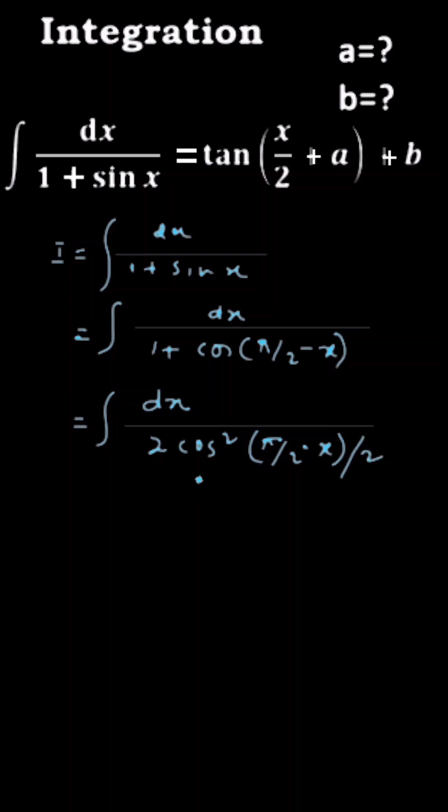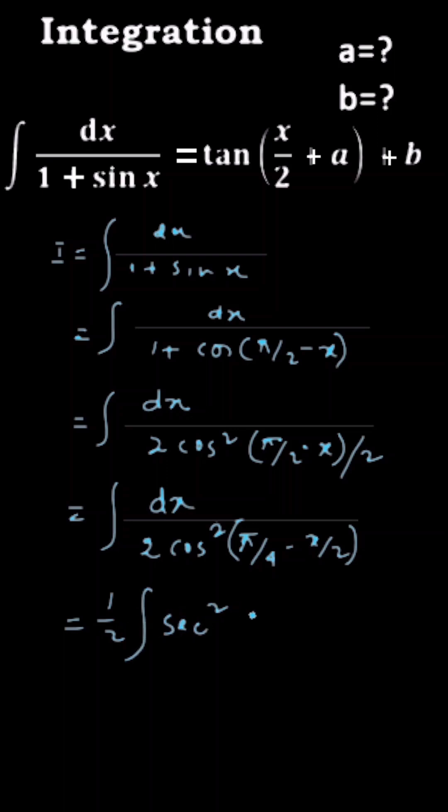Equal to integral of dx by 2 cos square pi by 4 minus x by 2, which is equal to, you can write it, half into integral of sec square pi by 4 minus x by 2 dx.